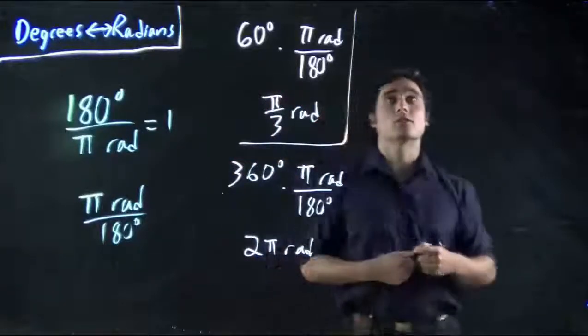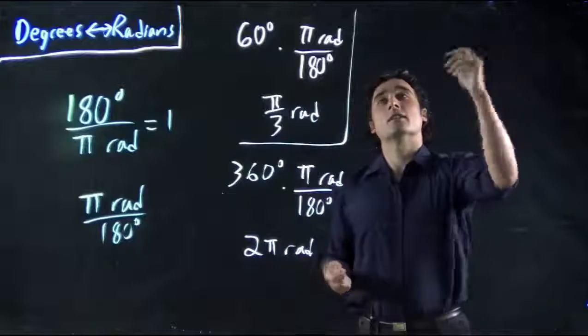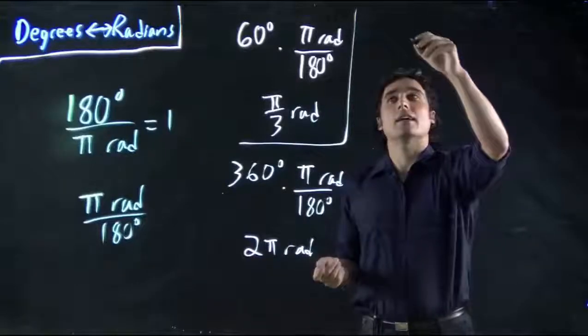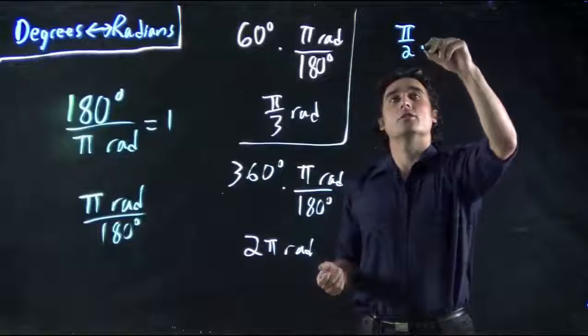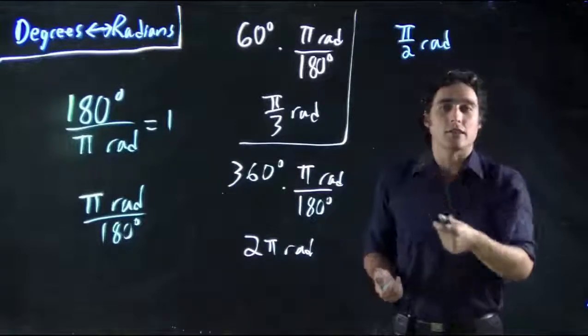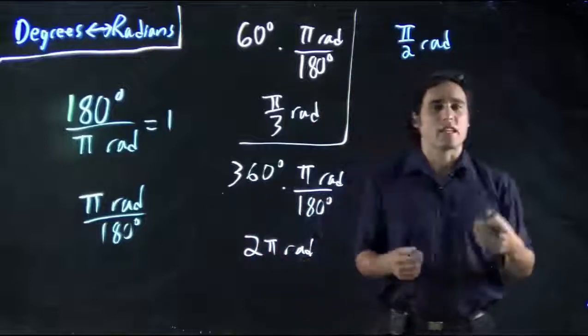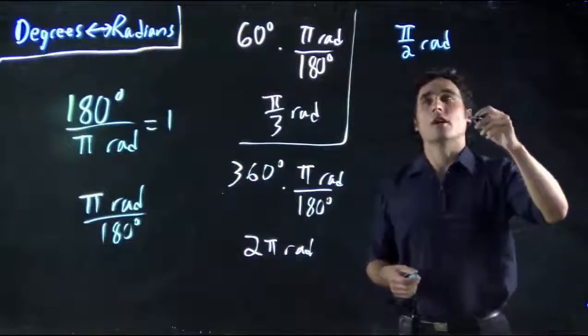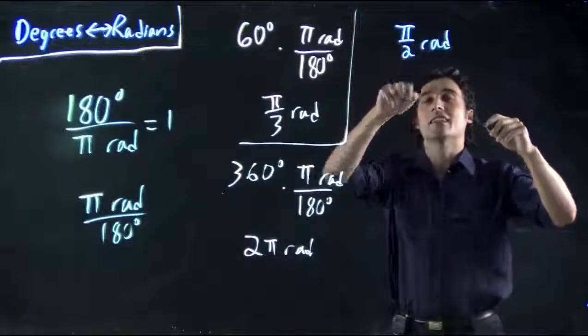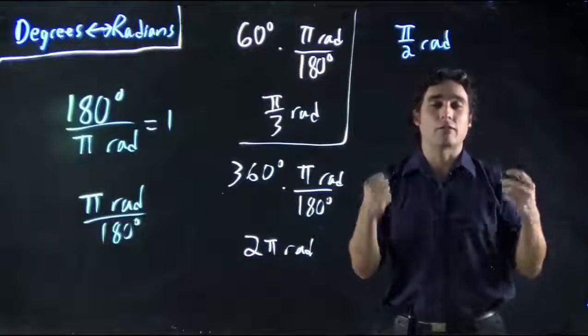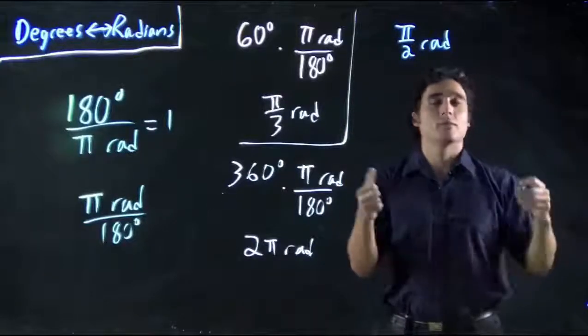But you might also start off with radians. So you might have something like π upon 2 radians. And you want to get this to degrees. Especially a lot of people like working with degrees because it's something they're more used to. So, in this case we had radians. We have to cancel the radians. Get rid of it. Divide it out. Put it on the bottom.